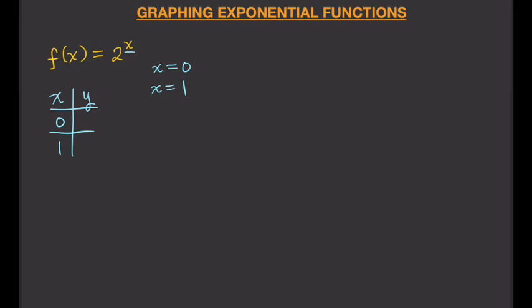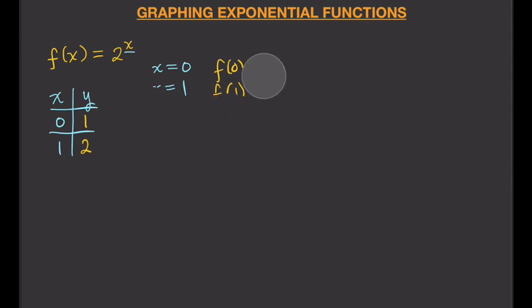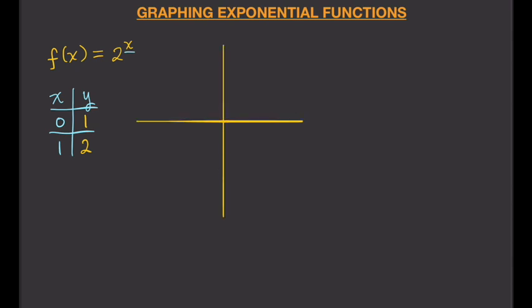To solve for y, plug in x values. f(0) = 2 to the power of 0, which equals 1. Then f(1) = 2 to the power of 1, which equals 2. So our y values are 1 and 2, and our table is complete. Now we draw a Cartesian plane to graph the function.